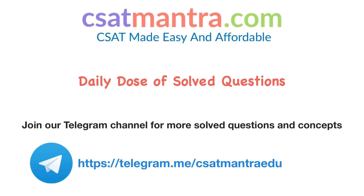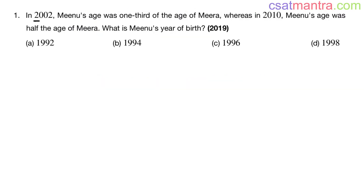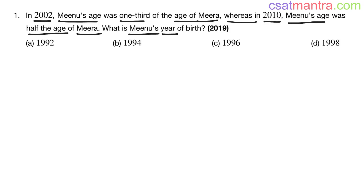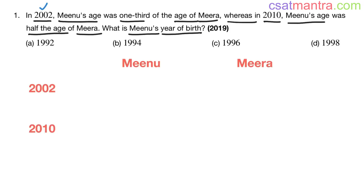In 2002, Mino's age was one third of the age of Meera, whereas in 2010, Mino's age was half the age of Meera. What is Mino's year of birth? This question is based on the ages concept from the algebra chapter. It was asked in 2019. In 2002, Mino's age was one third of the age of Meera.